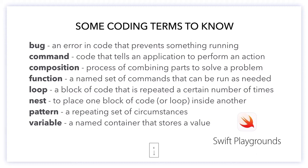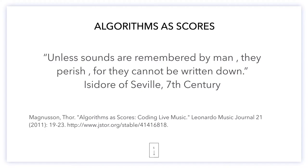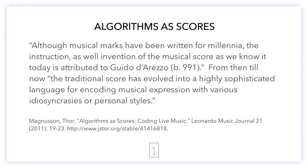Let's move on to part of the lesson about why we're focusing on this, and how I see music and coding working together. We have a quote here from the 7th century: "Unless sounds are remembered by man, they perish, for they cannot be written down." The invention of the musical score as we know it today is attributed to Guido d'Arezzo, born in 991. From then till now, the traditional score has evolved into a highly sophisticated language for encoding musical expression with various idiosyncrasies or personal styles — a key feature, because our students have their own personal styles. So let's start with Bach.